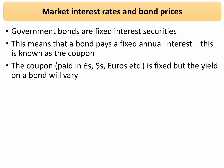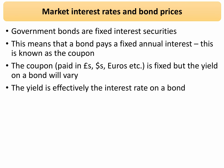This coupon can be paid in any currency — it could be a dollar, it could be a pound, it could be a euro for example. That coupon is fixed, but the yield on the bond will vary. The best way to think about the yield on a government bond is to regard it effectively as the interest rate on the bond.